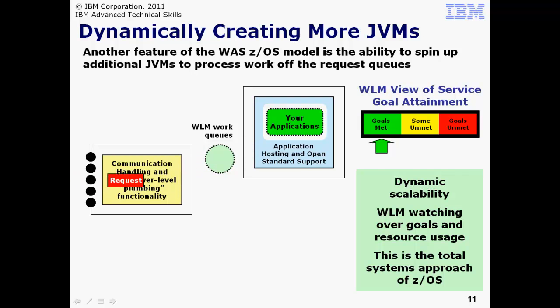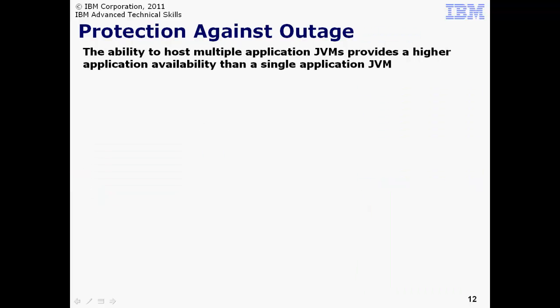The controller now places incoming work on the remaining ZWM work queue for the remaining Servant region. What we just illustrated is a kind of dynamic scalability with ZWM acting as the judge of when additional resources are needed. This is one of the governing philosophies of z/OS. It's a shared system with an objective of pushing resource utilizations fairly high. ZWM watches over all of it. It's a complete system view of things. Another value of the split JVM model is that it creates a kind of vertical cluster for availability.